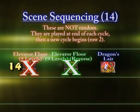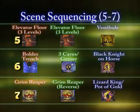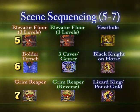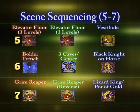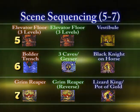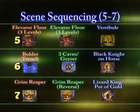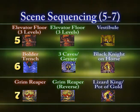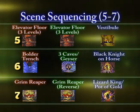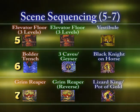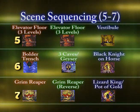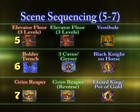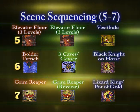Then the last thing that's played is Dragon's Lair. On row five, you've got elevator floor three levels twice and the vestibule. Some versions like the Atari Jaguar always play the vestibule after the drawbridge — so you go intro, drawbridge, vestibule — which is really how it is on the LaserDisc. So scene sequencing is a little different there.